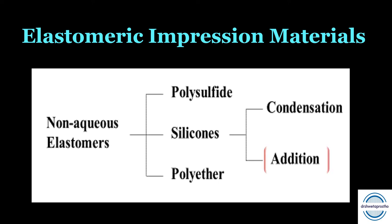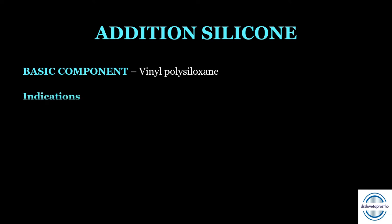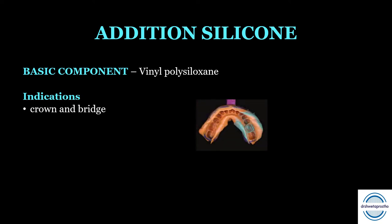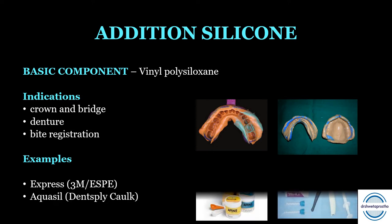Addition silicone is a very important and very common elastomeric impression material, most commonly used in clinics for crown and bridge and FPD work. The basic component is vinyl polysiloxane — whereas condensation silicone had polydimethylsiloxane. Indications: crown and bridge, complete denture (border molding and final impressions), and bite registration. Trade names include Express, Aquaseal, and many more.